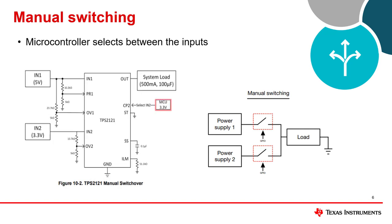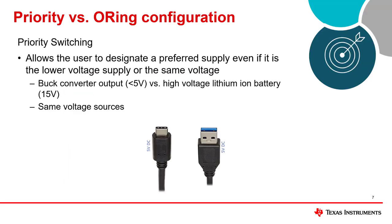On the other hand, manual switching is where a microcontroller selects between the inputs. Here is an example of the TPS2121 being controlled by a microcontroller. This can be helpful if a manual override is needed due to some external condition, or if the user requires the switching condition to be independent of the input voltage level.